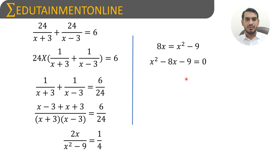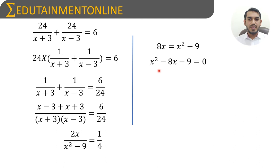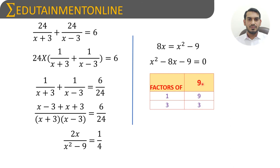This is a quadratic equation in the form ax squared plus bx plus c equals zero. We find the value of x by factorization, specifically by splitting the middle term. We need two numbers whose sum equals the middle term, which is minus 8, and whose product equals the product of the coefficient of x squared and the constant — that is, 1 times minus 9, which equals minus 9.